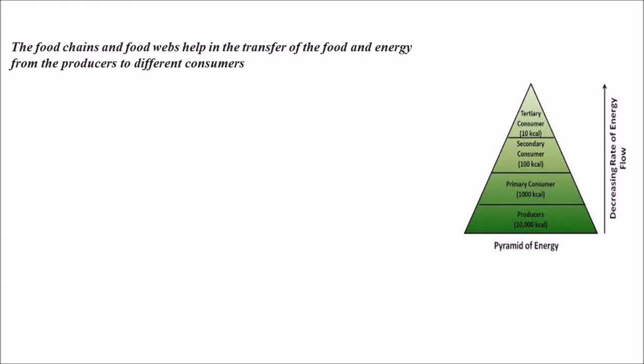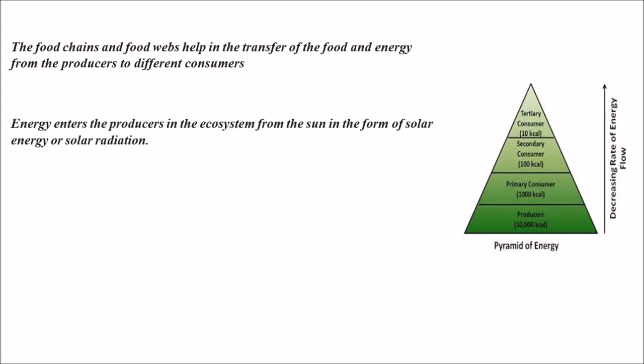Food chains and food webs help in the transfer of food and energy from the producers to different consumers, transferring food from one trophic level to another.